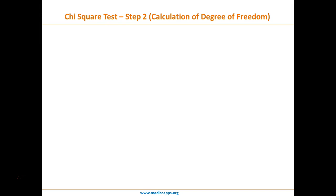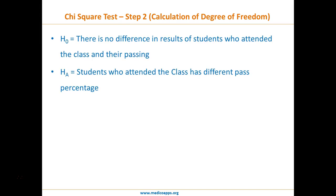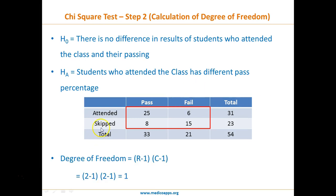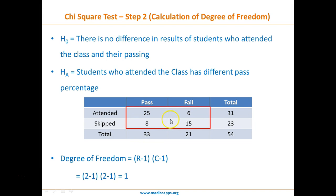Step 2 is calculation of degree of freedom. We have two rows, so row minus one equals one. We have two columns — remember, columns are vertical and rows are horizontal — so column minus one equals one. One times one equals one. So the degree of freedom for this example is one. In general, degree of freedom equals (rows − 1) × (columns − 1). For example, a 2×3 table gives degree of freedom of 2.